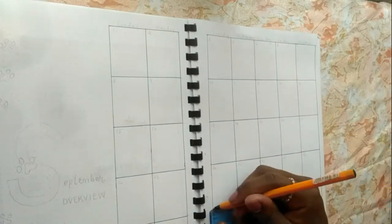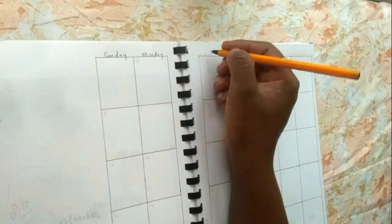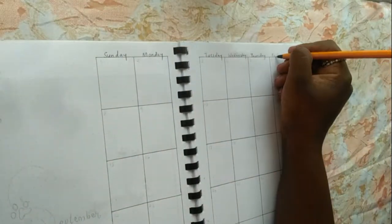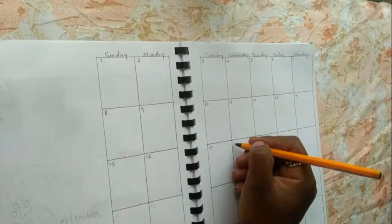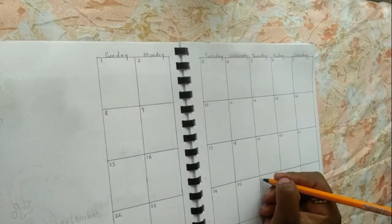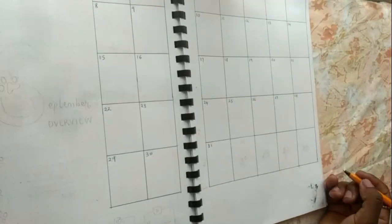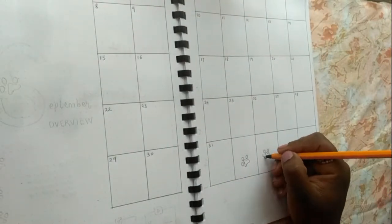Once that was done, I put in the days of the week and then numbered all the days. For the extra boxes I had at the bottom, I added a paw for every empty box.